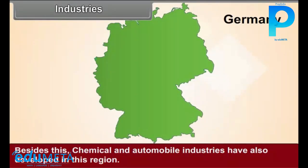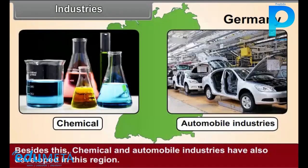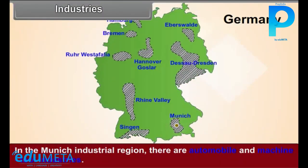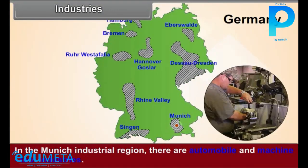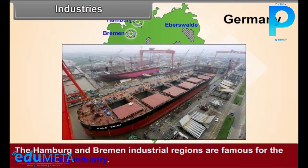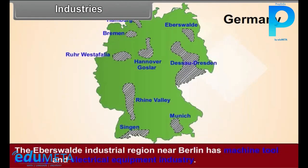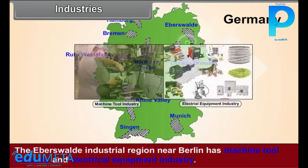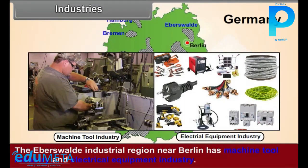Chemical and automobile industries have also developed in this region. In the Munich industrial region, there are automobile and machine tool industries. The Hamburg and Bremen industrial regions are famous for the shipbuilding industry. The Eberswalde industrial region near Berlin has machine tool industry and electrical equipment industry.